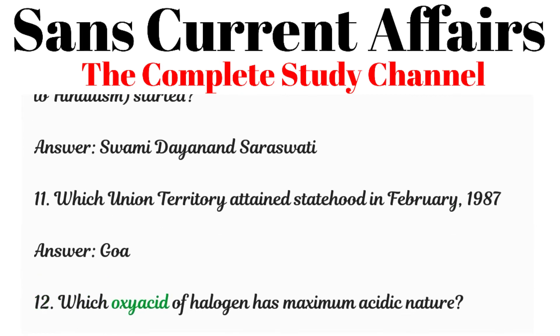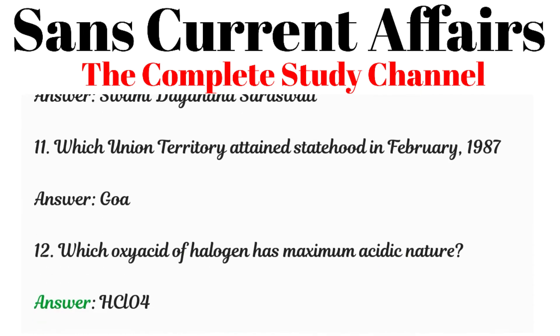Question 12: Which oxyacid of halogen has maximum acidic nature? Answer: HClO4.